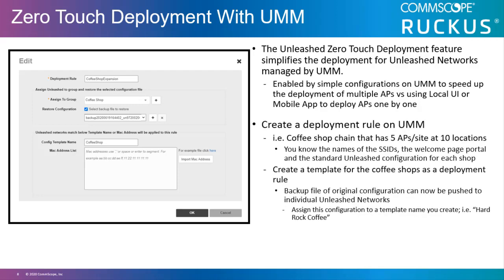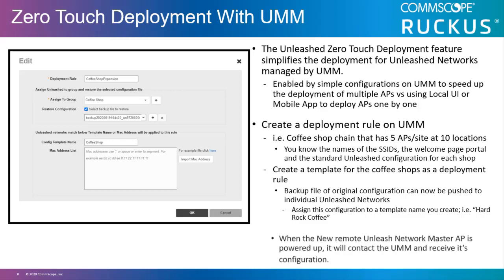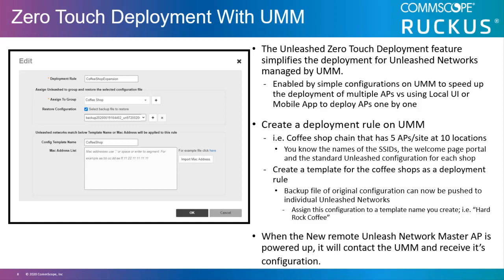To use zero-touch deployment, you create a deployment rule on the UMM. For example, a coffee shop chain with 5 APs per site at 10 locations would create a template based on the known SSIDs, welcome page portal, and standard Unleashed configurations for each shop. A backup file of that configuration can be saved and pushed to individual Unleashed networks once they are powered up. You assign this configuration to a template name such as 'Hard Rock Coffee.' When the new remote Unleashed Network Master AP is powered up, it contacts the UMM and receives its configuration — simple, quick, and efficient.